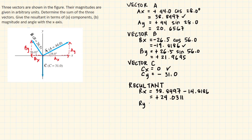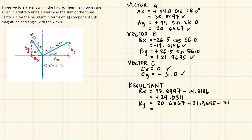R sub y is the sum of all y components: positive 20.6567 plus positive 21.9695 plus negative 31.0. Therefore R sub y equals 20.6567 plus 21.9695 minus 31, which equals 11.6262. This is also positive, meaning the y component is directed upward.